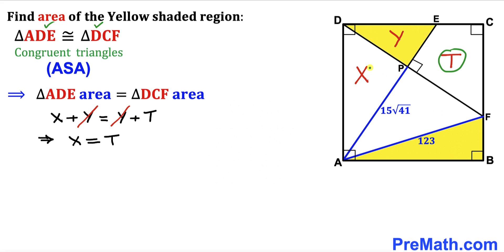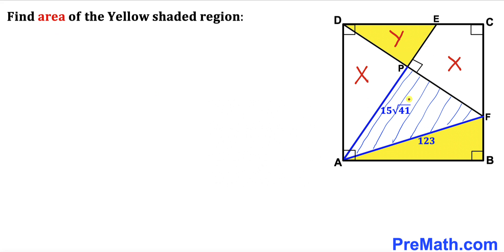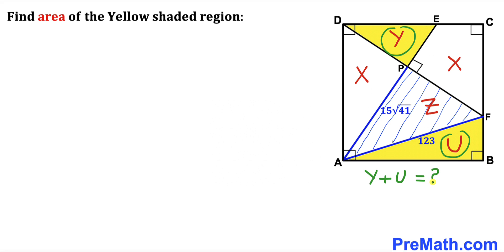Since area T equals area X, we replace T with X, so both regions are labeled X. Next, we label the area of triangle APF as Z and the area of yellow triangle ABF as U. We are interested in calculating the combined yellow region area Y plus U.